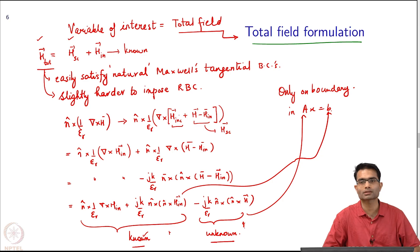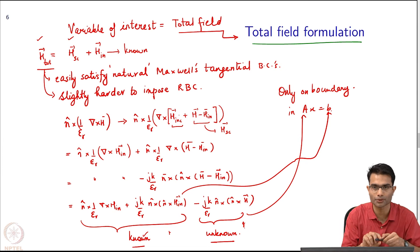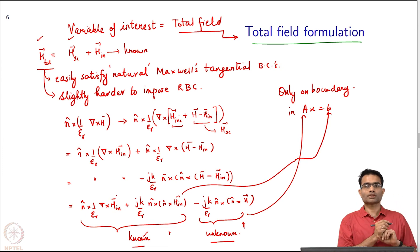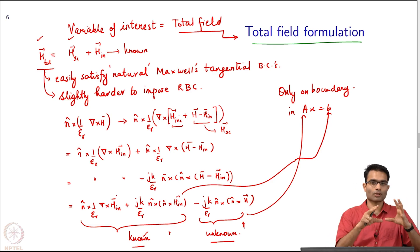So in Ax equals b this term will go back into A and this term will go into b, that is what will happen. That is the way with the total field formulation, that is how we will work. It is not tricky, just taking care of on which field I am imposing the boundary condition and so on. h incident is known, so I will just substitute it over there and h is the unknown in which I will replace the basis function.